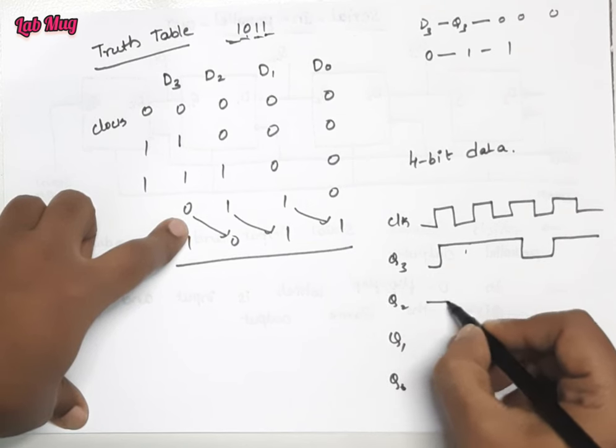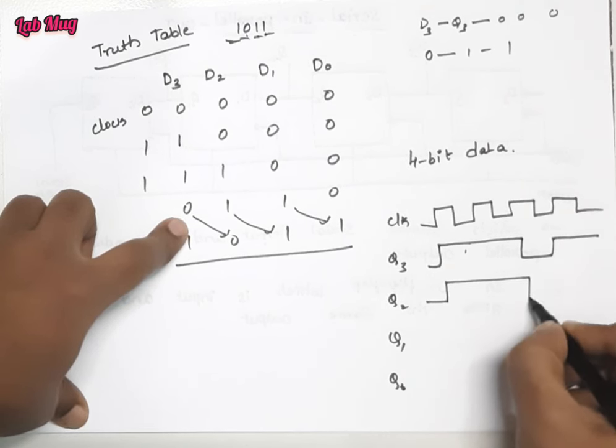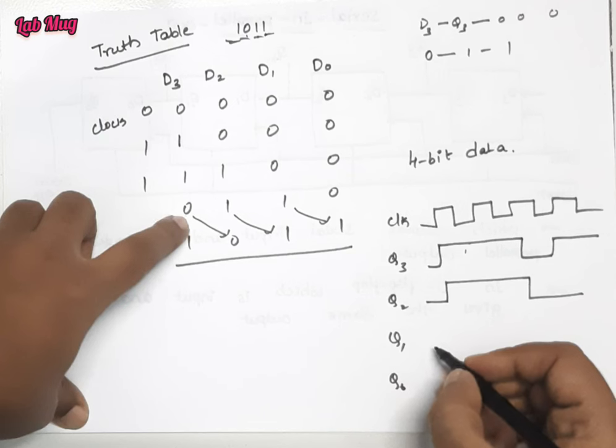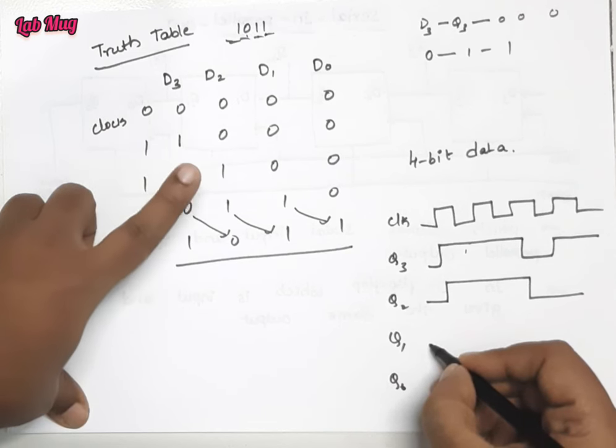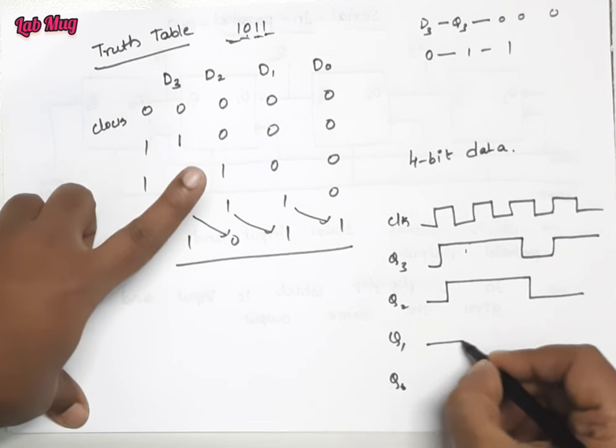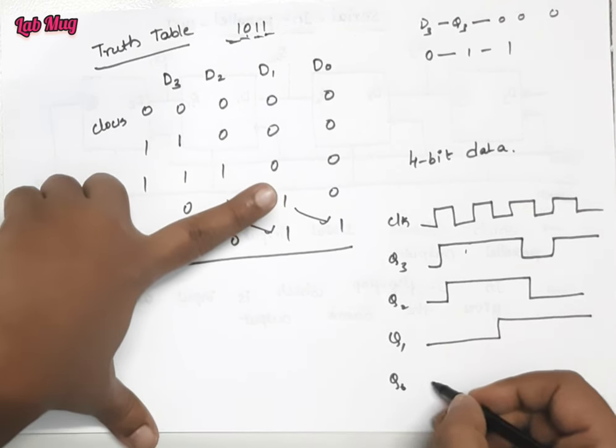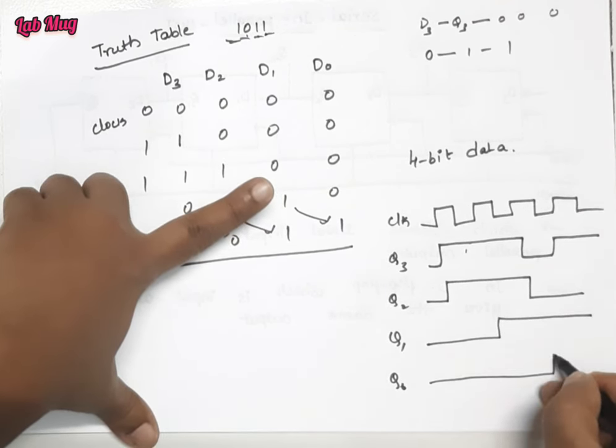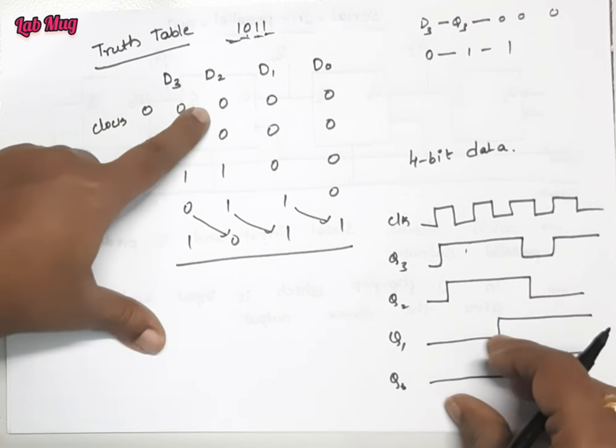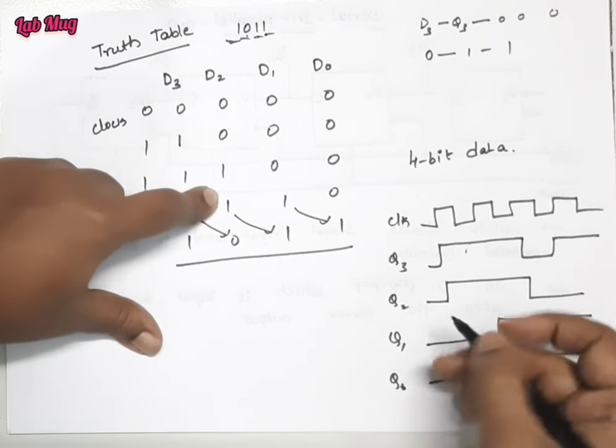That is zero one one and zero. And the next Q1 is zero zero one one. And the last one Q0 is zero zero zero one. So this is Q2, zero zero one one.